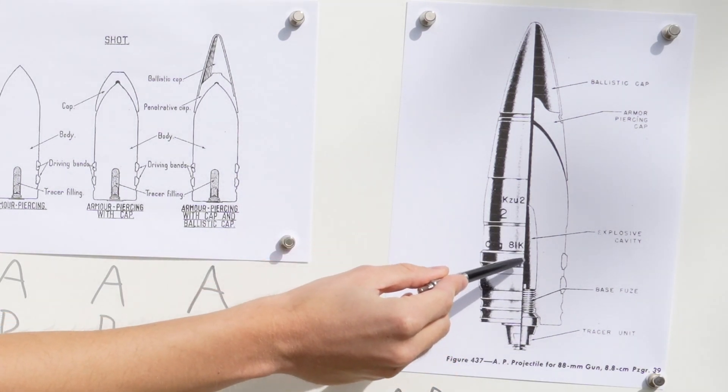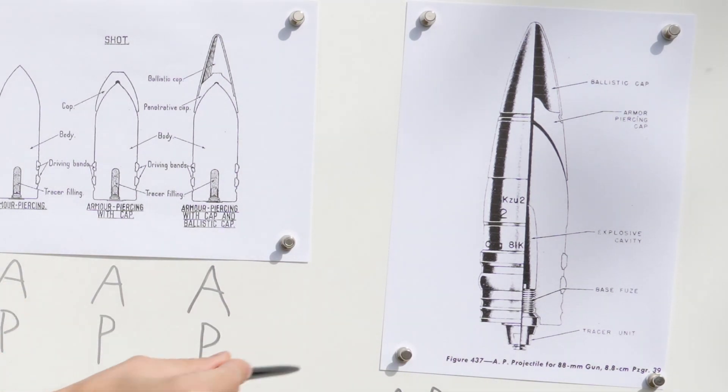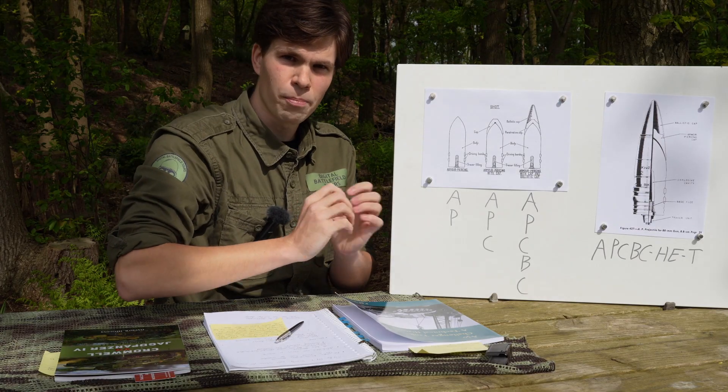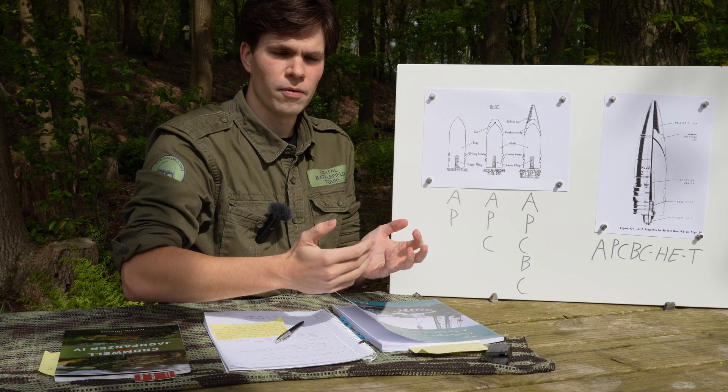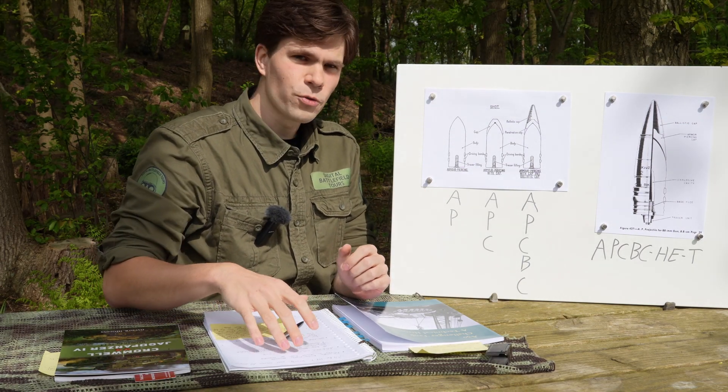But that means there's less room for explosive filler. And in order to create a good burst pattern there's more metal for the explosion to have to break apart to create splinters, which it just doesn't really have the power for. For those reasons there's a pretty good case for the British to just do away with all the complexity.